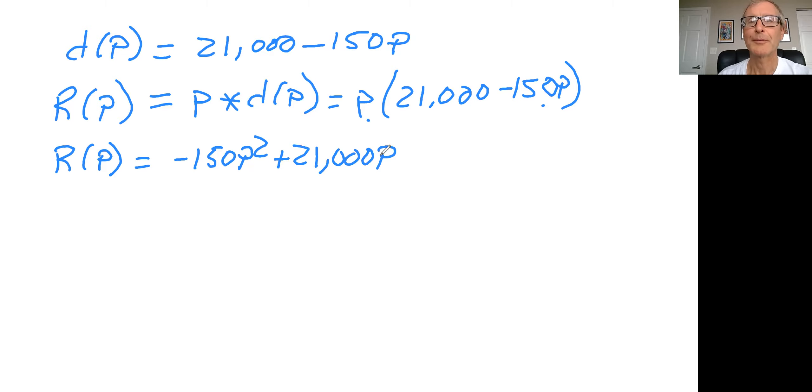And so how do we solve this? Well, first thing we need to do is we need to generate the revenue equation, which depends on price. And that is p times d(p). And so when you do that, you get p times 21,000 minus 150p. So the revenue equation would be minus 150p squared plus 21,000p.